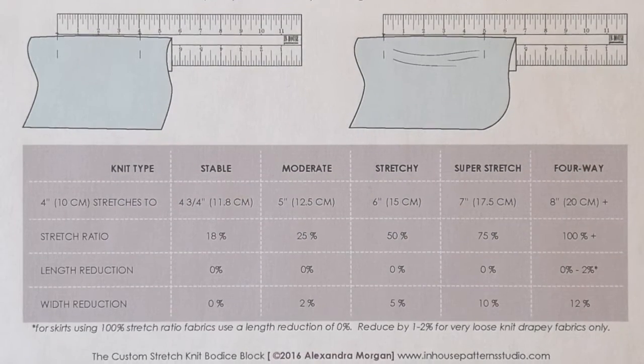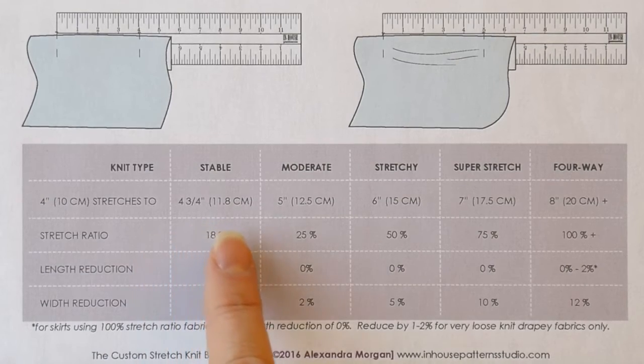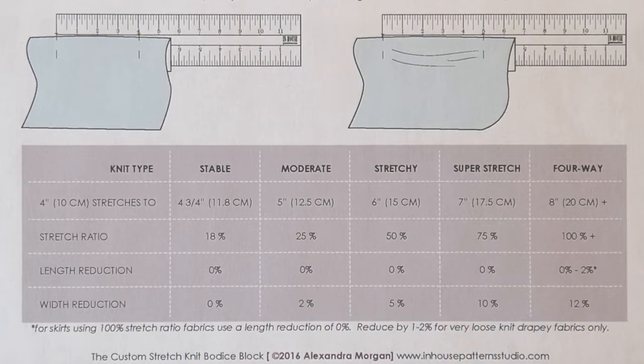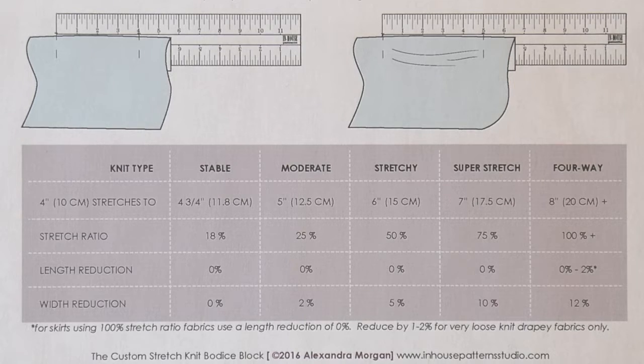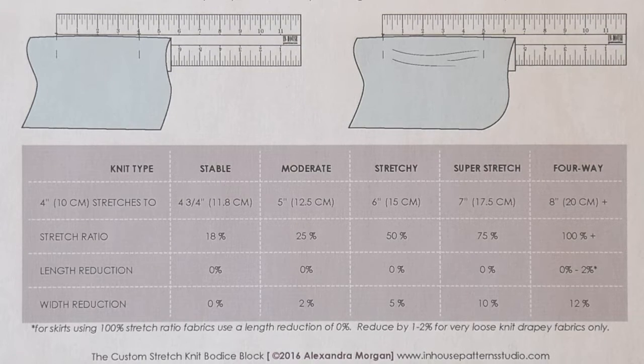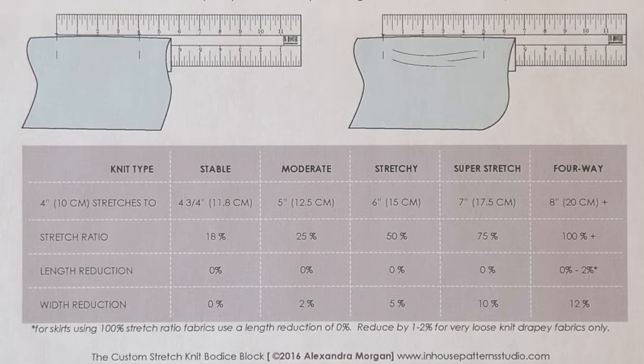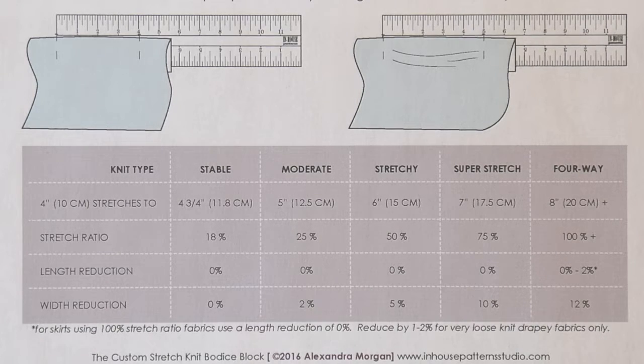Knit fabrics come in a really wide variety of stretch ratios. I've developed the custom stretch knit bodice draft to accommodate almost any knit fabric. For the bodice, the direction of greatest stretch must go around the body so that you can breathe and move around comfortably even though the garment will be made smaller than your body measurements. Since most knit fabrics have the greatest ability to stretch on the crosswise grain, we'll be determining the stretch ratio of the fabric width first. Once we've done that, we can also determine the stretch ratio of the lengthwise grain using the same method.